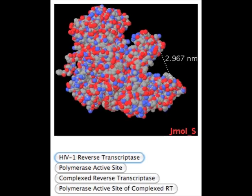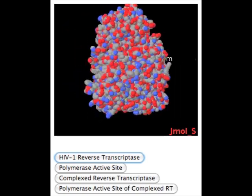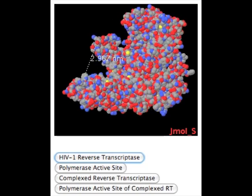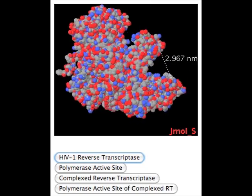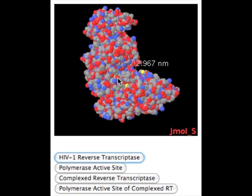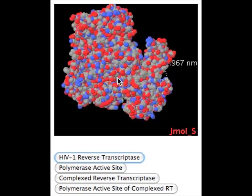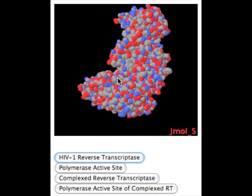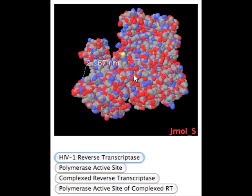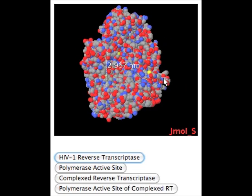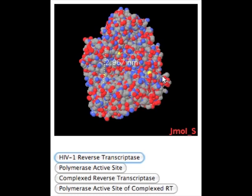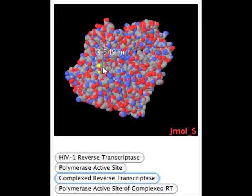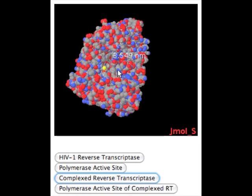Non-covalent interactions not only serve to hold efavirenz within the NNRTI binding pocket, but they also induce a number of conformational changes to the protein that inhibit its catalytic function. The first of these is a 40-degree rotation of the polymerase thumb domain. This increases the distance between the thumb and finger domains, which must be in a closed conformation in order to effectively bind RNA or DNA. As seen in this JMol representation, the thumb and finger domain of unbound HIV-1 RT is approximately 2.967 nanometers, while the distance greatly increases in the complexed RT due to the 40-degree rotation of the thumb domain.